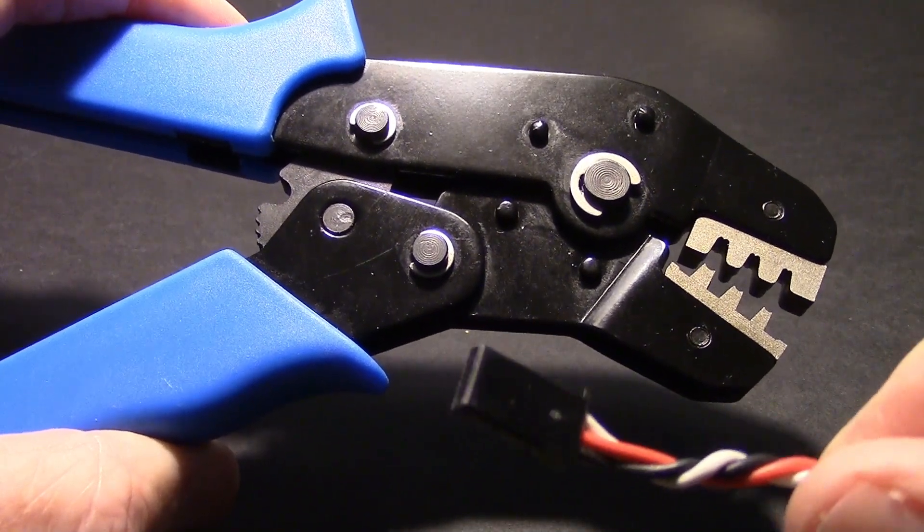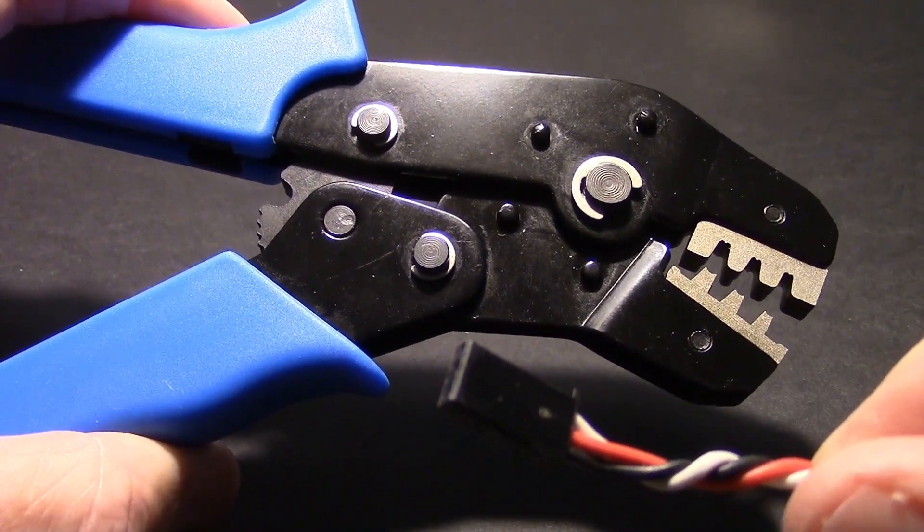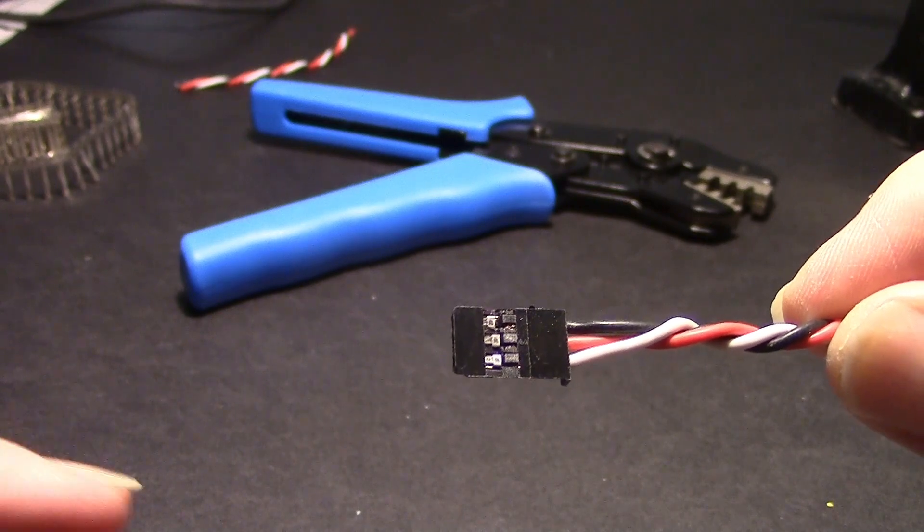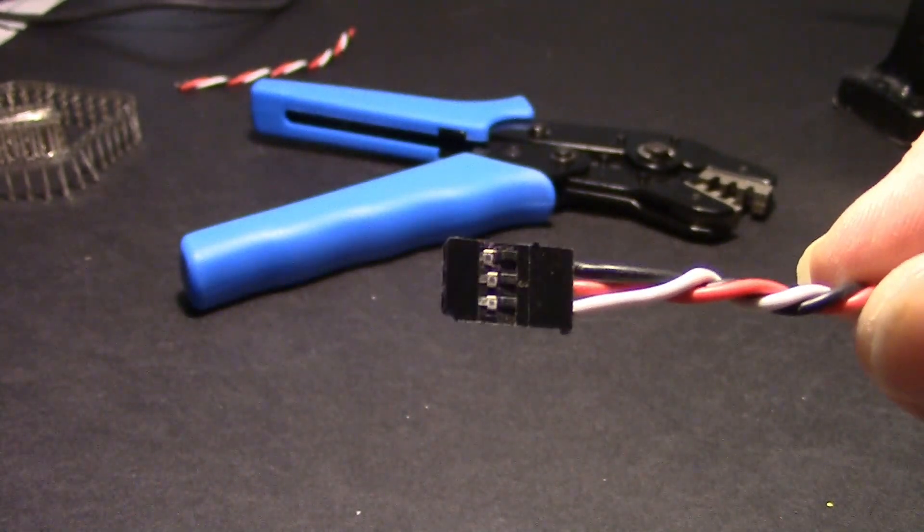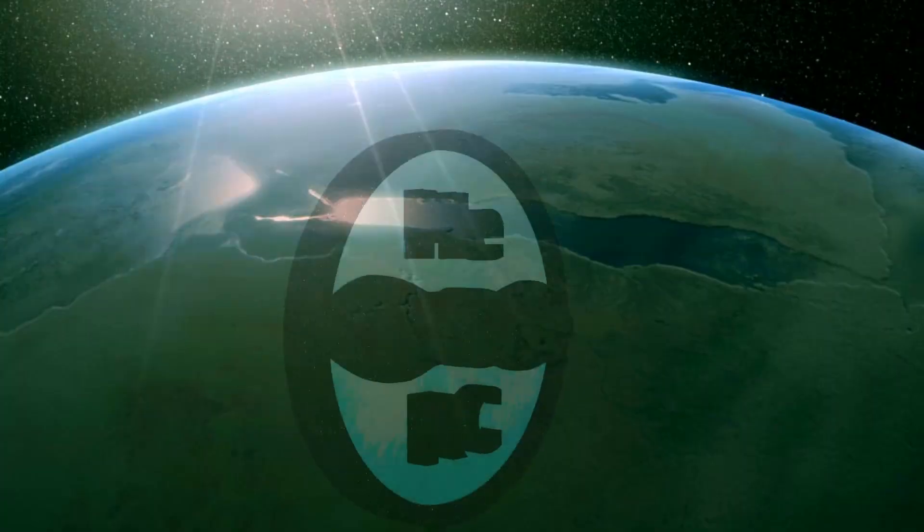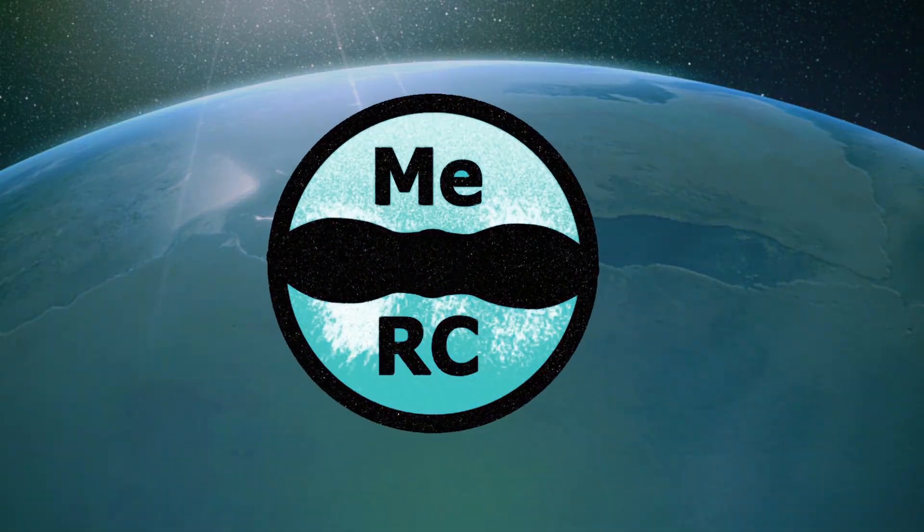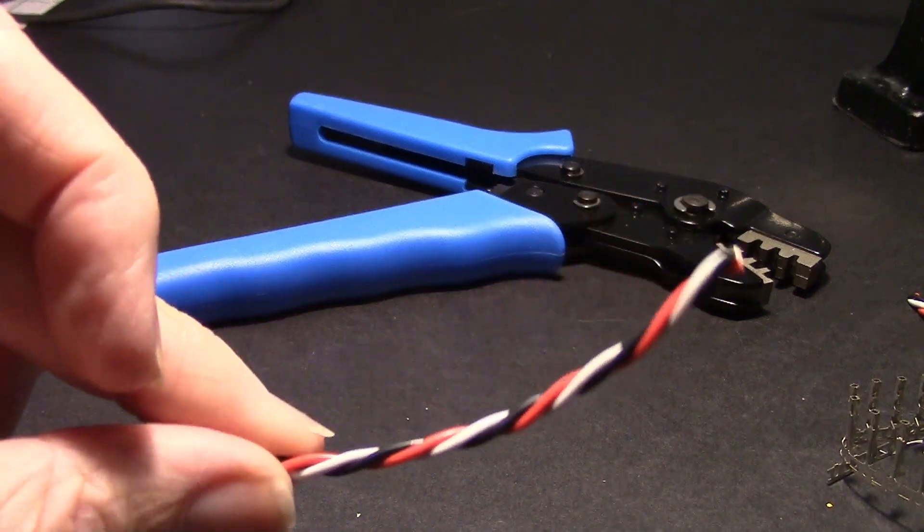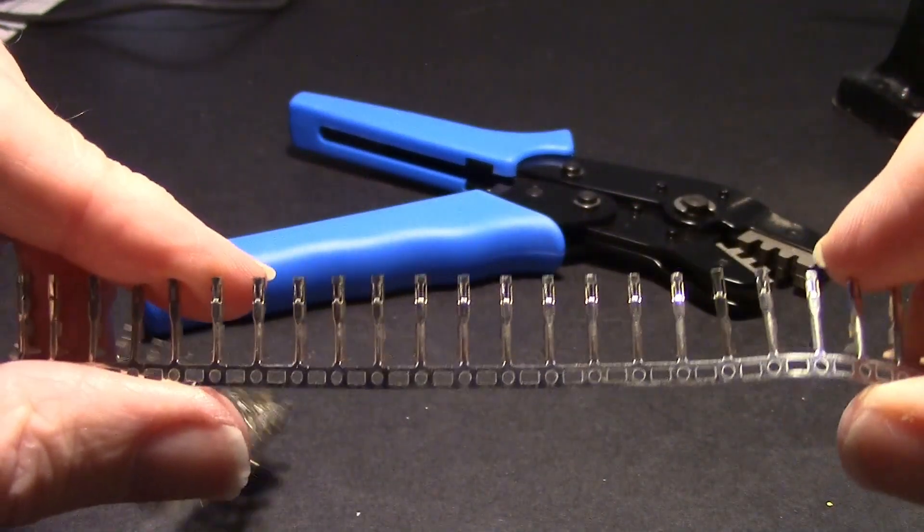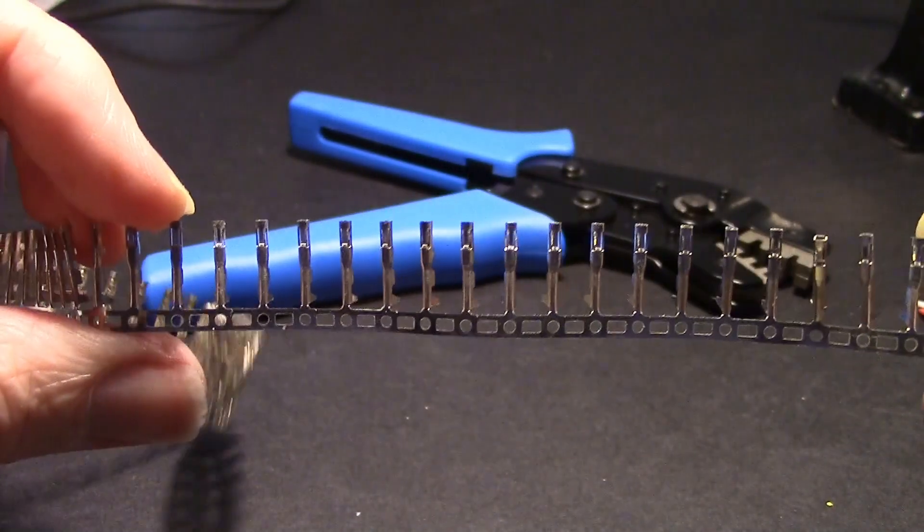How to use a servo lead crimping tool for RC fumblers. The goal is to put one of these connectors on the end of the three wires. You'll need some wire like this and some crimp ends like this. I got these from Pololu.